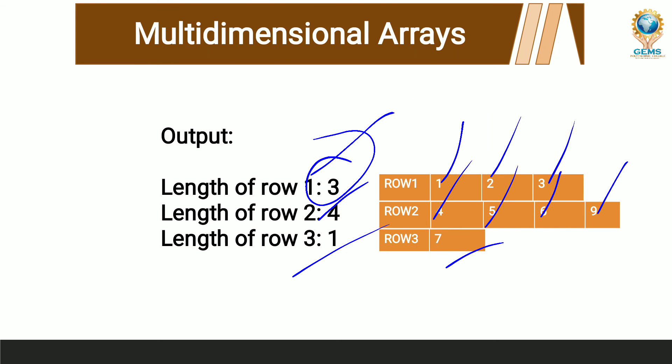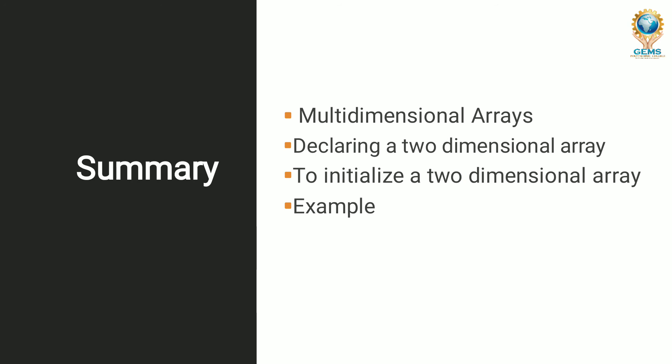This is about two-dimensional arrays, their declaration, and programming. To sum up: we discussed multi-dimensional arrays — two dimensions, three dimensions, four dimensions; more than one dimension is called a multi-dimensional array. In this video lecture I discussed declaration of multi-dimensional arrays, initialization of multi-dimensional arrays, assigning elements, and gave an example of how to write a simple program and get the output. Thank you so much, bye bye.